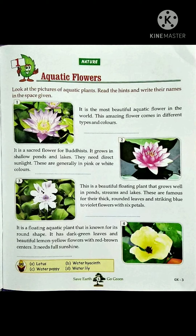Look at the pictures of aquatic plants, read the hints, and write their names in the space given. Some hints are given, and with the help of those hints we can identify each plant. First number: it is the most beautiful aquatic flower in the world. This amazing flower comes in different types and colors. This flower is water lily.